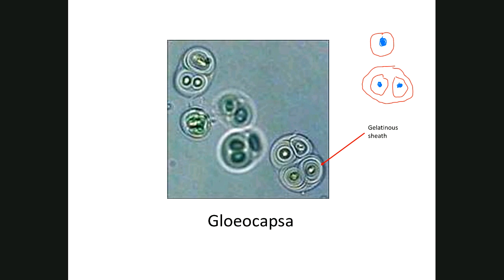It could be a step towards multicellularity — just keeping the cells together, and eventually something evolves to communication between the cells. But that's not the case here with Gloeocapsa. The cells are separate, although they are maintained in clusters because of these gelatinous sheaths.